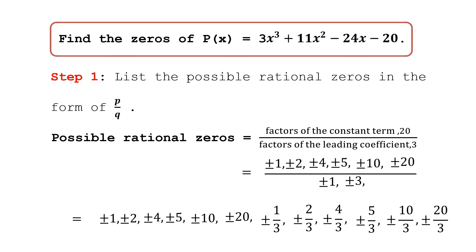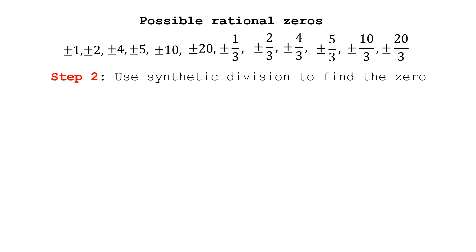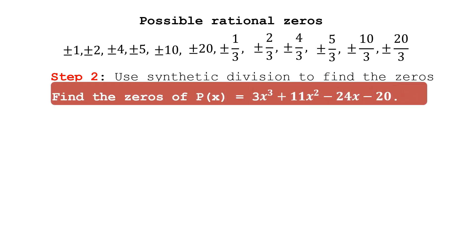Let's proceed to step number two: use synthetic division to find the zeros of p(x). Our polynomial is third degree, so we need to find three zeros. Because we have 12 possible rational zeros, we use trial and error. Take note of the numerical coefficients of the given polynomial — 3, 11, -24, and -20 — as these will be the coefficients of our dividend.